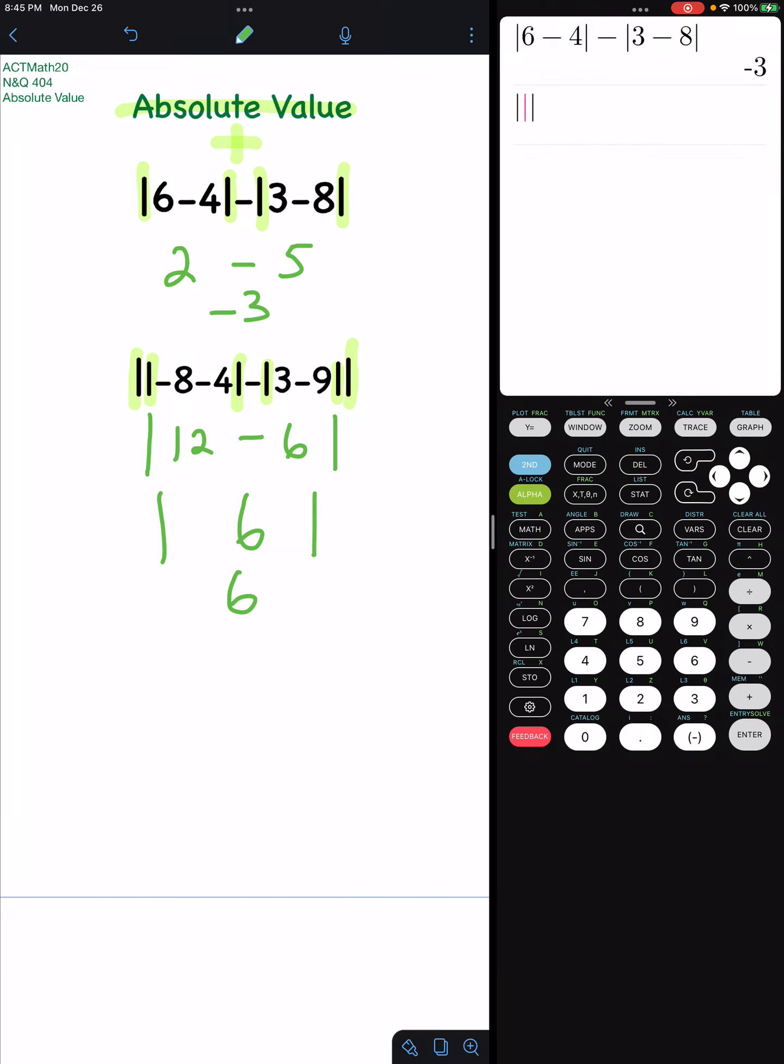There's also another trick to get there. You can use the alpha button up to this function up here. There is absolute value again.